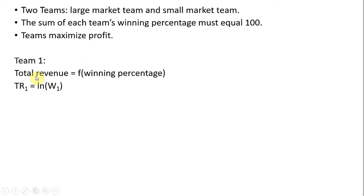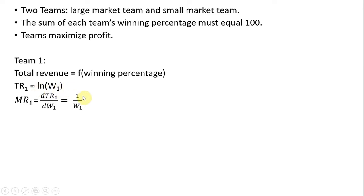Team 1 has total revenue that is a function of its winning percentage. We'll specify this functional form: team 1's total revenue equals the natural log of its winning percentage. If we take the derivative of team 1's total revenue with respect to its winning percentage, following the rules of derivatives of natural log functions, we just get one over team 1's winning percentage. The marginal revenue here can be interpreted as an increase in revenue from increasing the winning percentage by one percentage point.